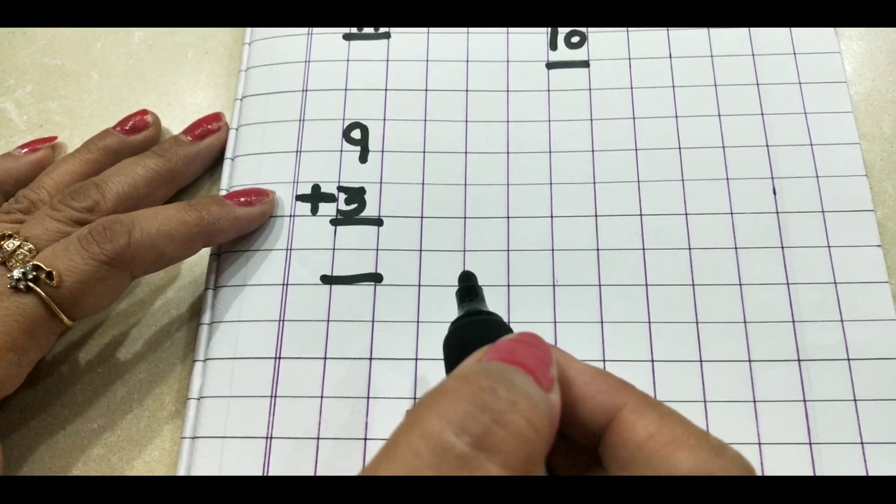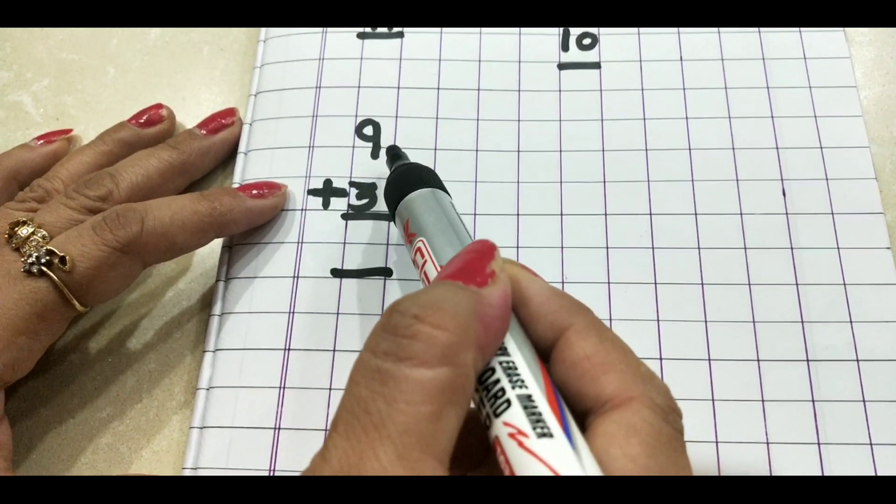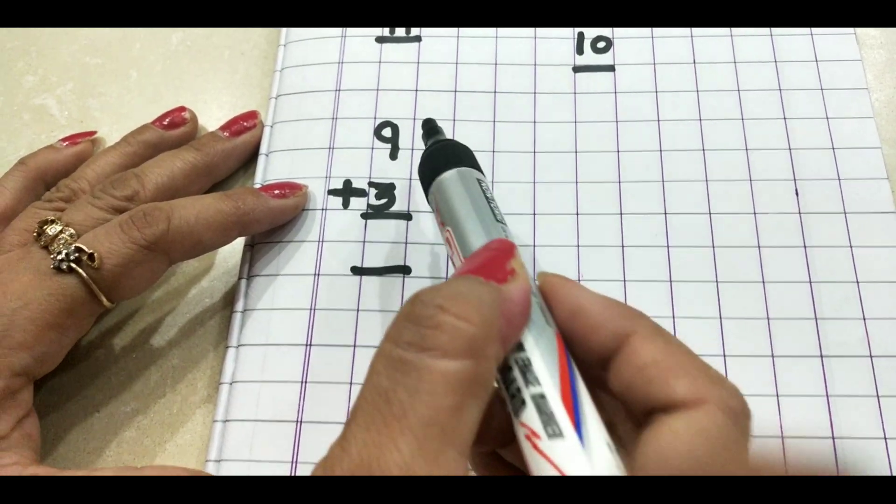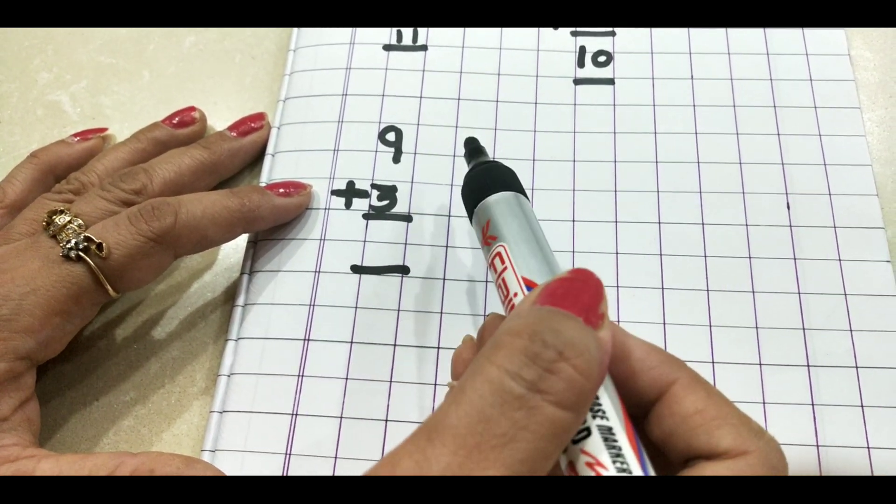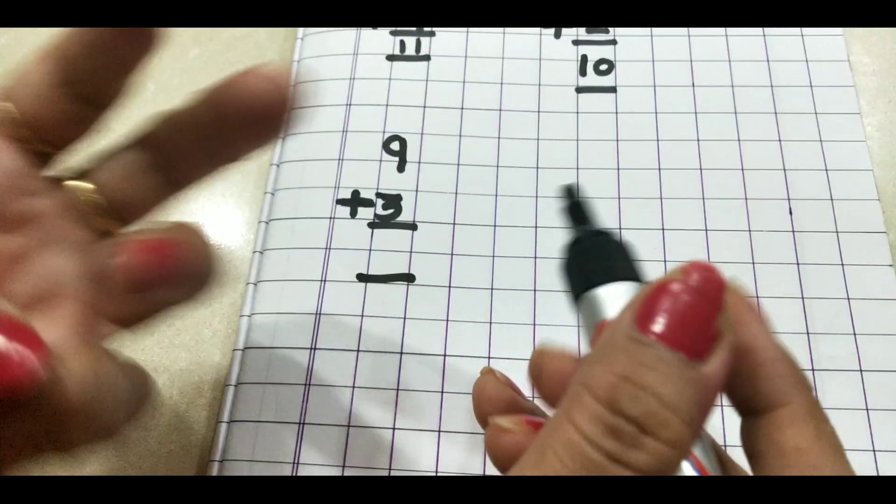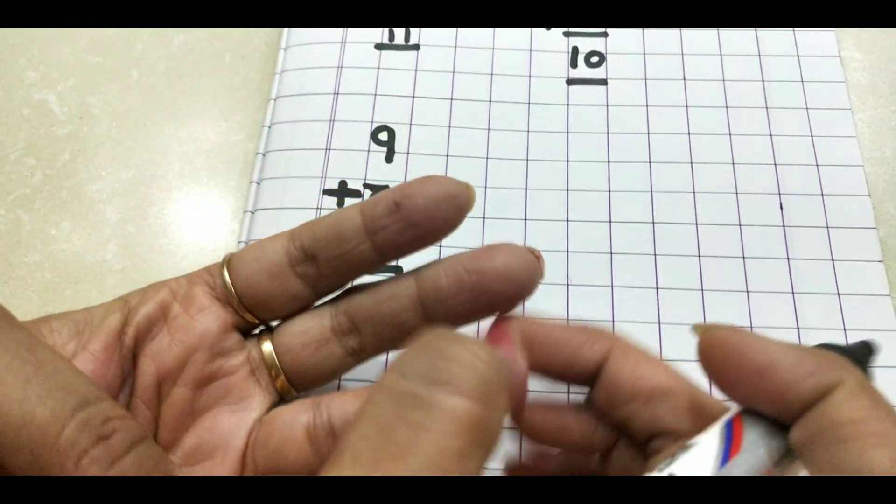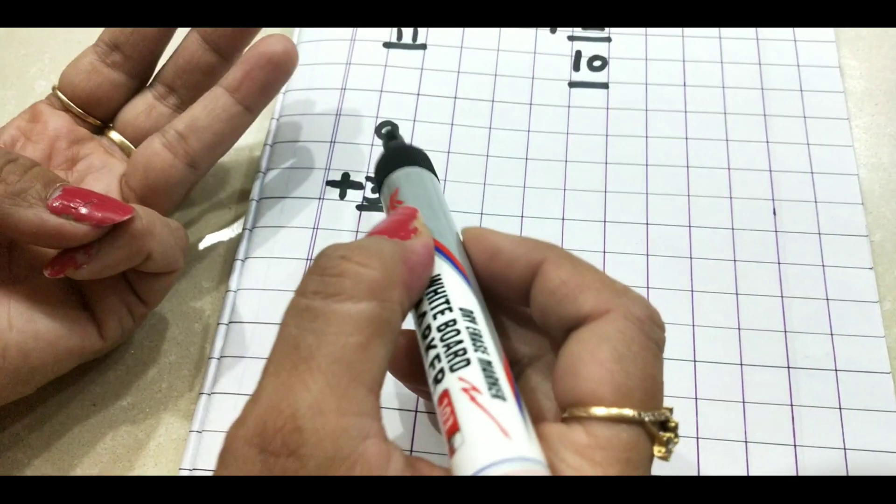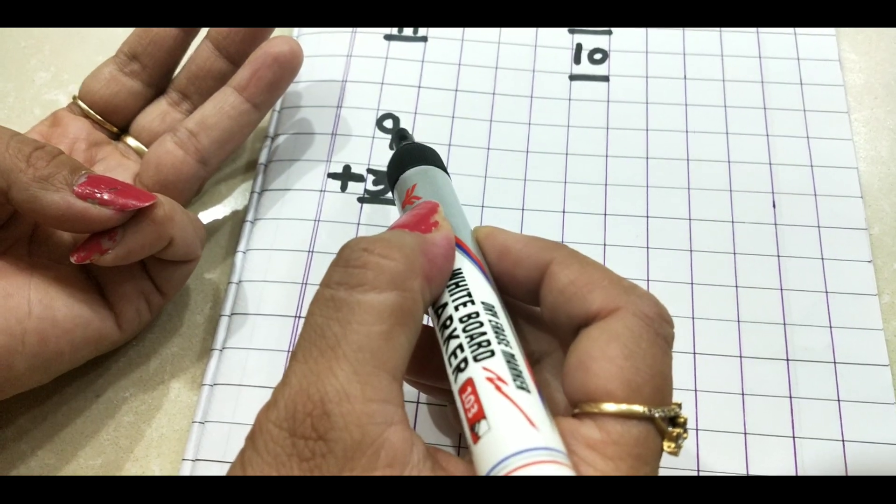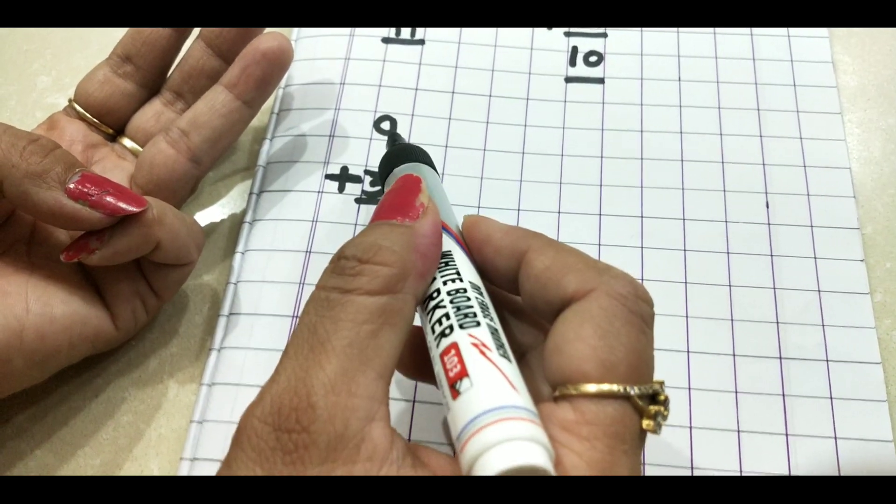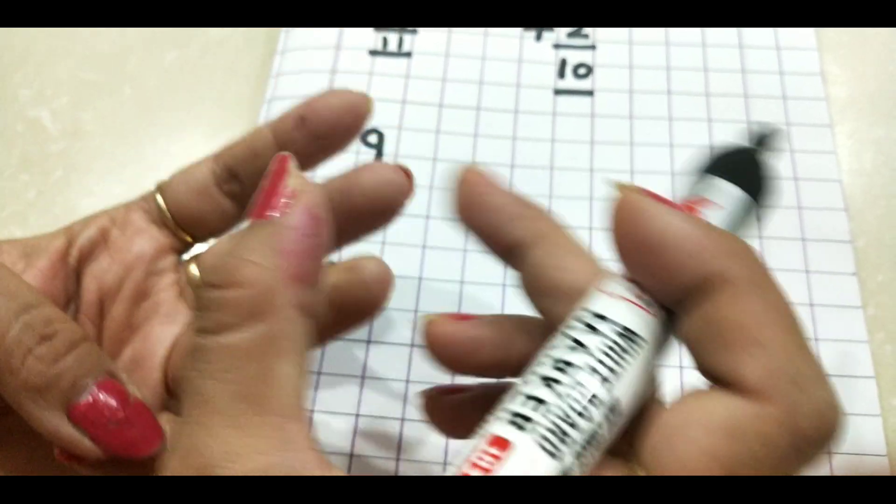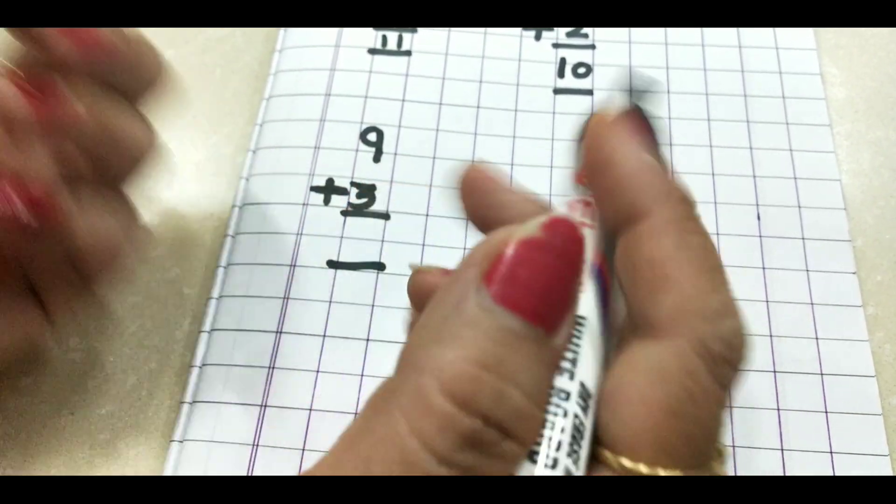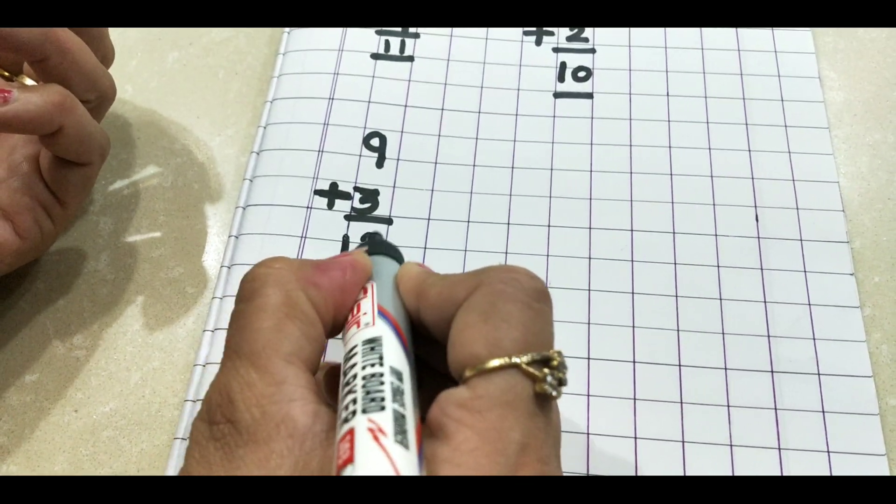Let's do one more question. 9 plus 3. 9 we'll keep in our mind and 3 on fingers. 1, 2, 3. Where is 9? 9 is in our mind. What comes after 9? 10. We'll start counting. 10, 11, 12. The total is 12.